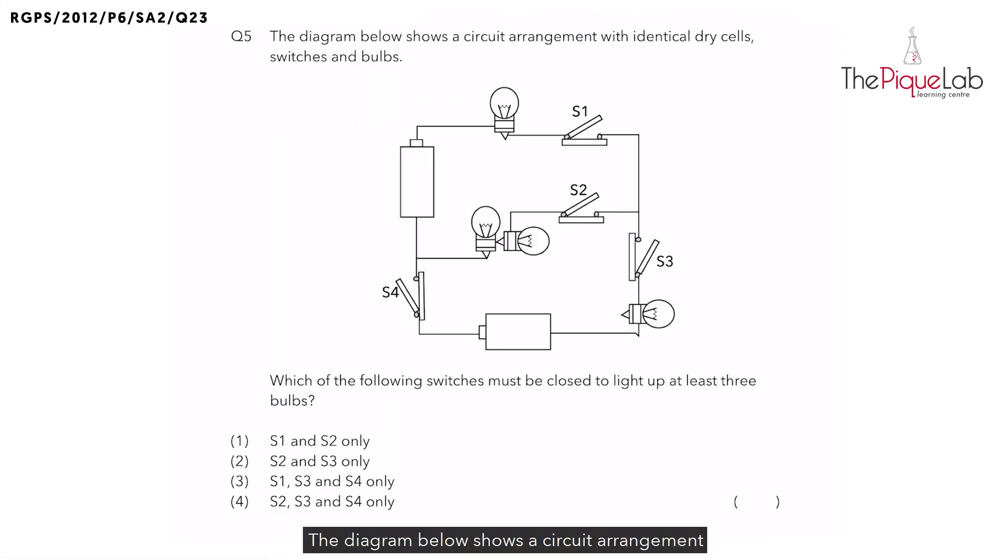The diagram below shows a circuit arrangement with identical dry cells, switches and bulbs. Now what are dry cells? Dry cells are just another name for batteries.